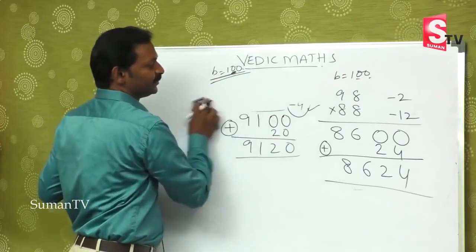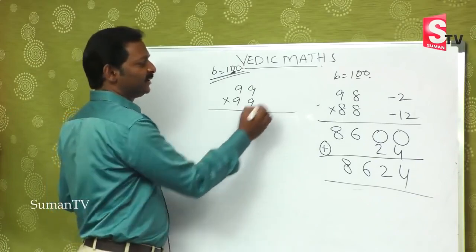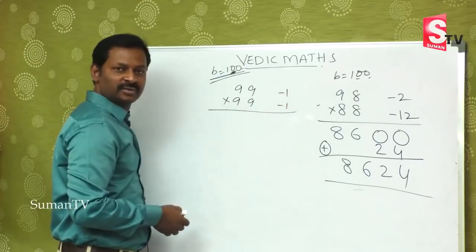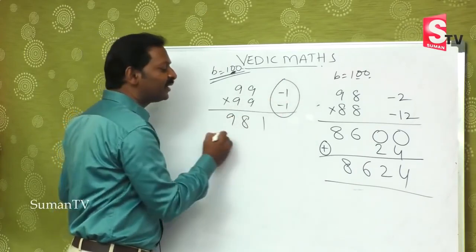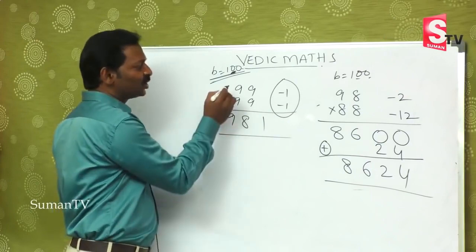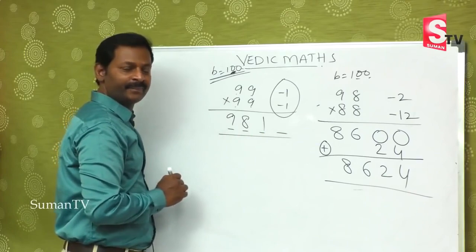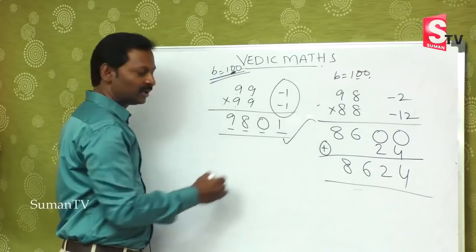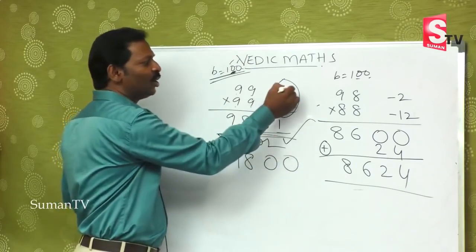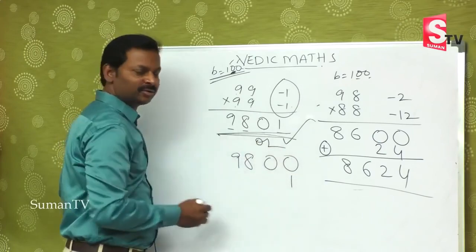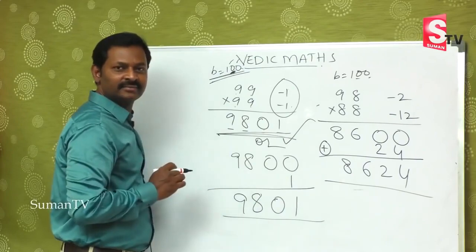Suppose 99 is multiplied by 99. It is minus 1 for each. So 99 minus 1 is 98 — first part of the answer is 98. Minus into minus plus: 1 times 1 is 1. Since base is 100, put 2 zeros — so write 01 in the second part. Final output: 9801. Not even 10 seconds — that's the beauty of this method.